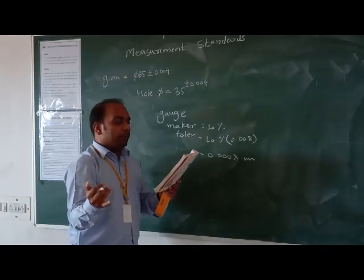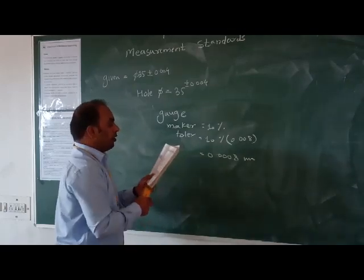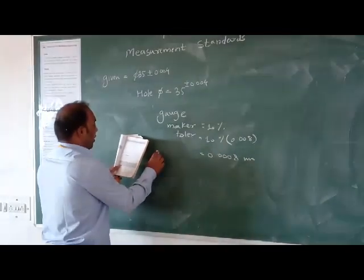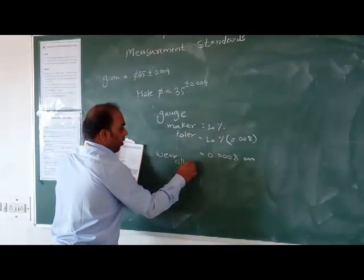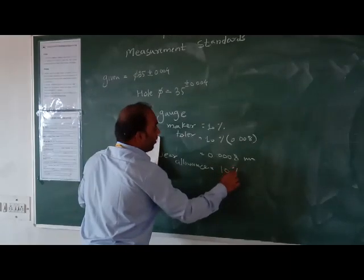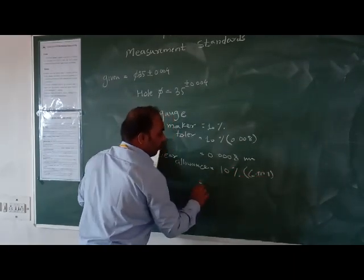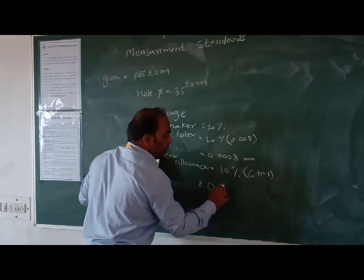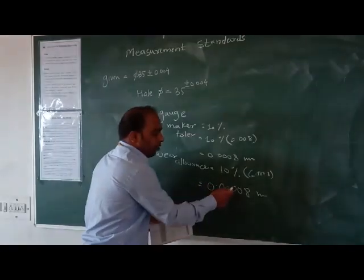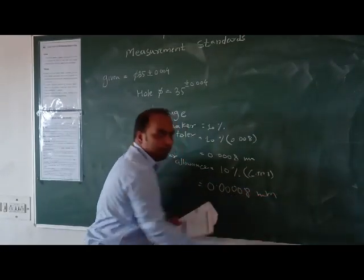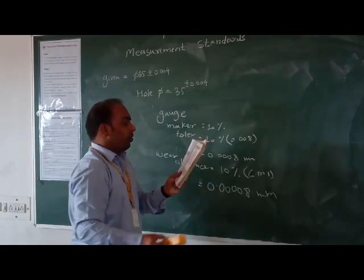Now we have four conditions: upper limit, lower limit, work tolerance, and gauge maker tolerance. Next is wear allowance, which is taken as equal to gauge maker tolerance, which is 0.0008mm.